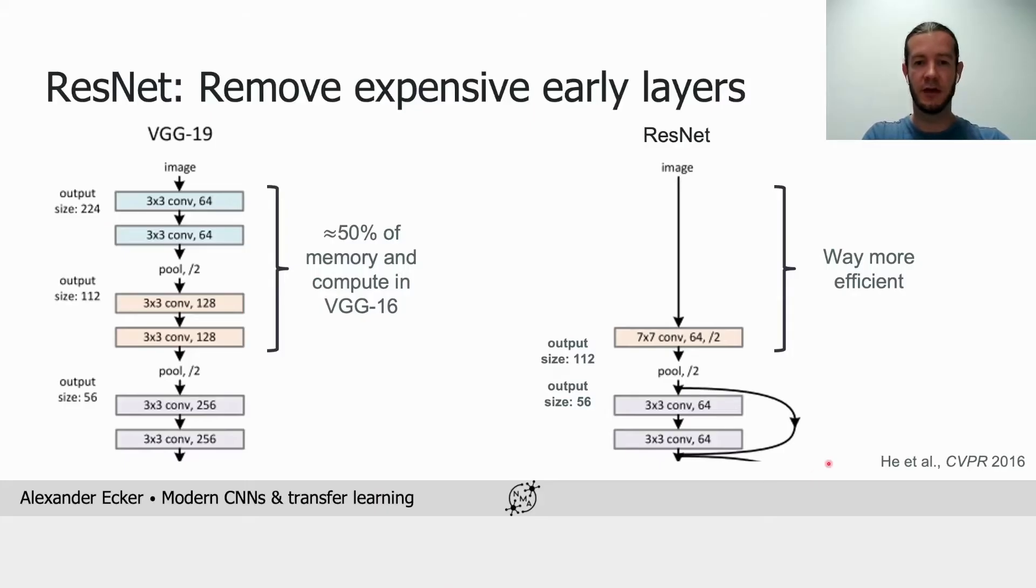ResNet, shown on the right, replaces those four layers by one single 7x7 convolution layer with a stride of 2 that is directly followed by a pooling layer. And the result here is a feature representation of the same resolution as after the fourth layer of VGG but requiring much, much less floating point operations in memory.